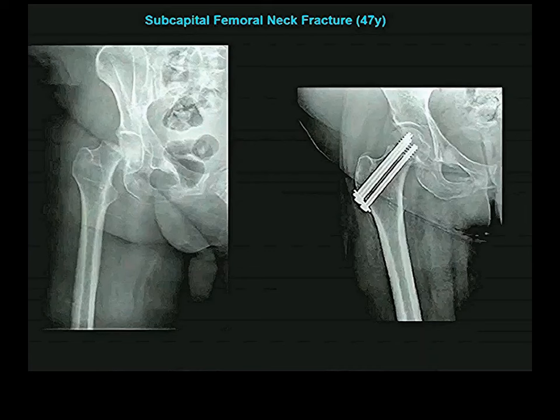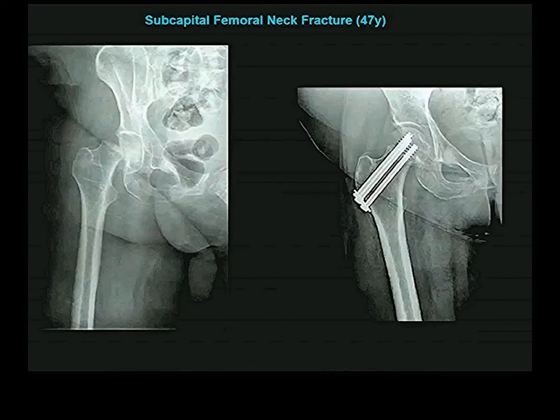Here is a person with a subcapital fracture, and here is how it is treated — internal fixation. They drill holes through the shaft of the femur and up through the neck to screw the head back in place. This is the method of choice if the person is not too old and has normal bone density. If they are very old or have osteopenia or osteoporosis, internal fixation will not be attempted.